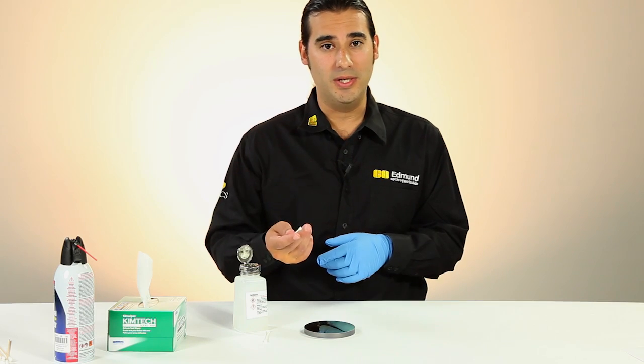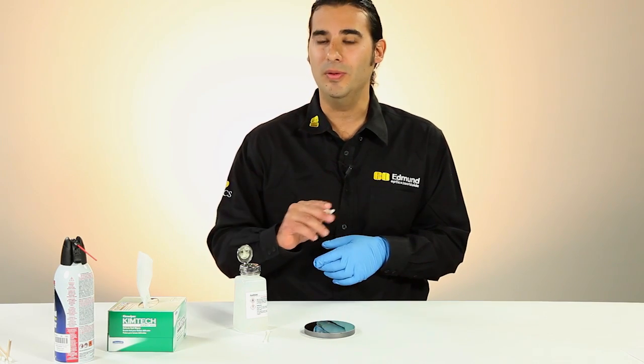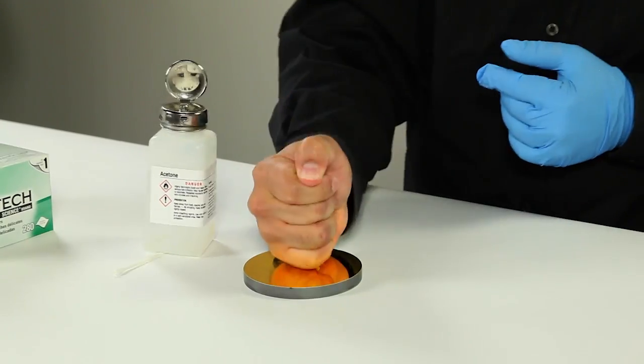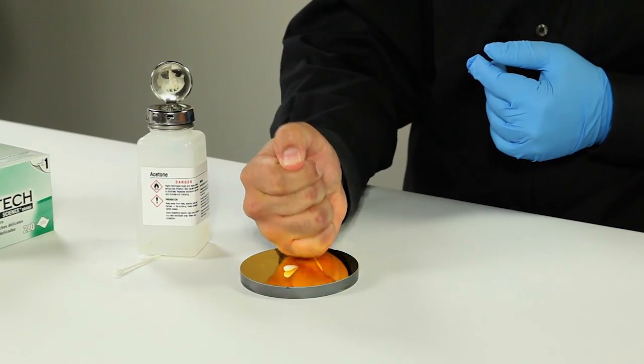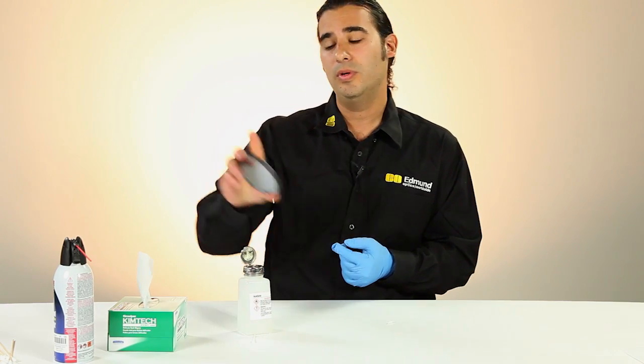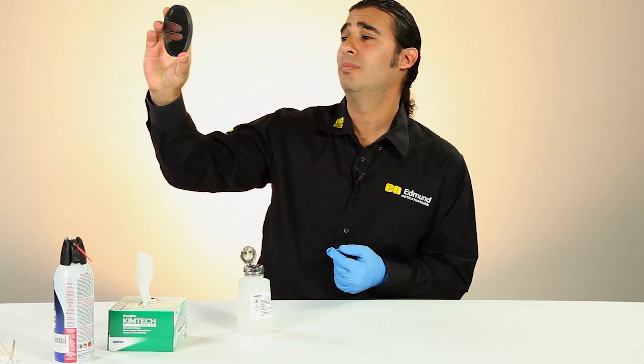For more resistant smudges, cotton tip swabs may also be used. Do not use cotton tip swabs forcefully on mirrors as it may damage their delicate metallic coating, making it more difficult for you to see your adorable reflection.